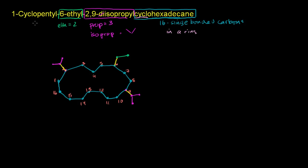And then finally, we have a cyclopentyl. Pent is 5, but it's 5 in a cycle. So this is a 5-carbon ring branching off of the main ring, and it's at the first spot. Let me draw a 5-carbon ring: 1, 2, 3, 4, 5 — it looks just like a pentagon. That's a cyclopentyl group, and it's attached to the 1-carbon on my cyclohexadecane. And we're done. We've drawn 1-cyclopentyl-6-ethyl-2,9-diisopropyl cyclohexadecane.